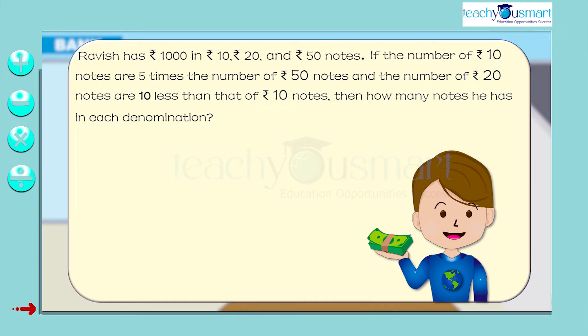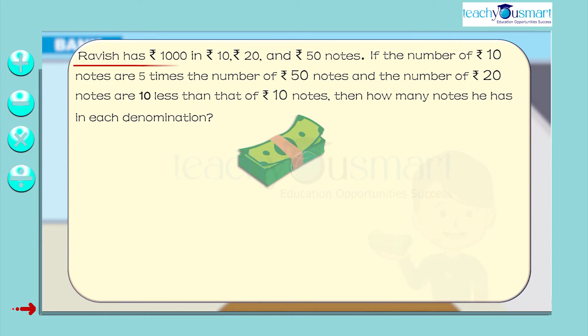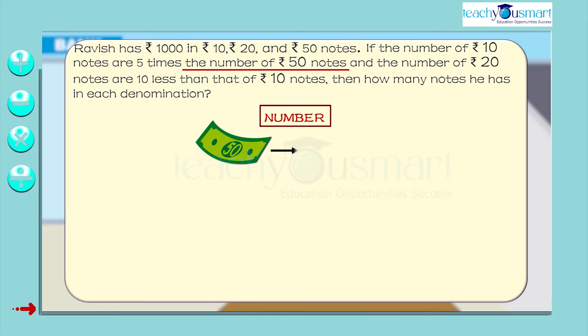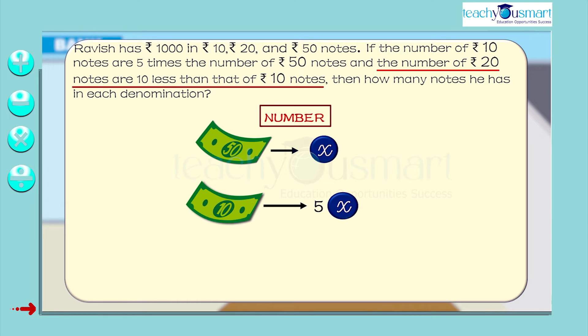Let's try to understand the question. Here, Ravish has a total of 1000 rupees, but it is divided into 10 rupees, 20 rupees, and 50 rupees. Let's take the number of 50 rupee notes as x. Then the number of 10 rupee notes be 5x. The number of 20 rupee notes is 10 less than of 10 rupee notes, so the number of 20 rupee notes is 5x minus 10.